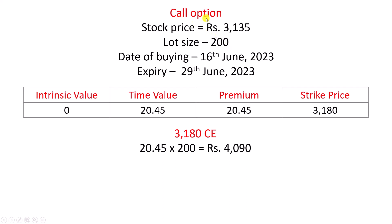First I will explain about call option. In this example, I have taken a strike price of 3180. The 3180 strike price has a premium of 20.45 rupees. Let us say that I am an option buyer and I buy the 3180 CE call option. If I have to buy this call option, I need to pay 20.45, which is the premium, into the lot size of 200. This is the amount that I need to pay to the seller to buy one lot of Asian Paints option.